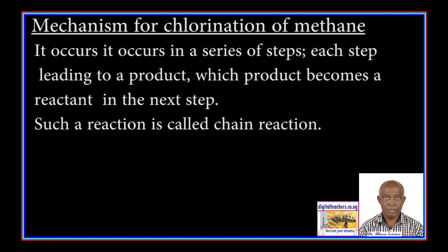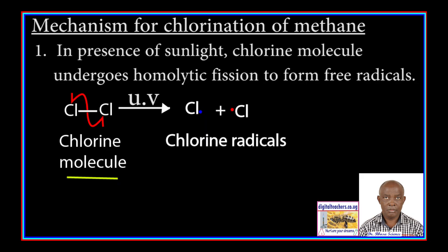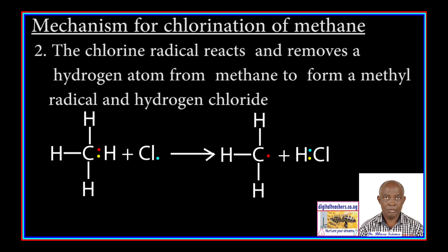Mechanism for chlorination of methane. It occurs in a series of steps, each step leading to a product which becomes a reactant in the next step. Such a reaction is called a chain reaction. Step 1: In the presence of sunlight, a chlorine molecule undergoes homolytic fission to form free radicals.